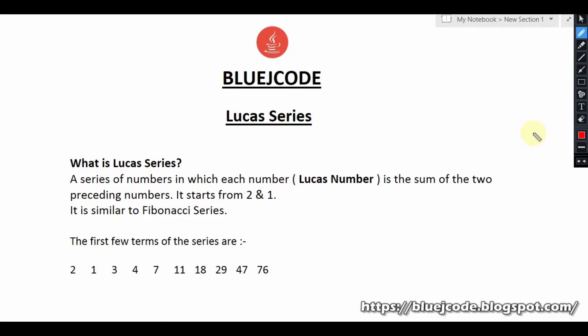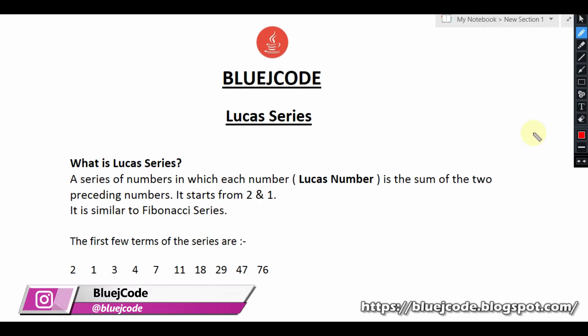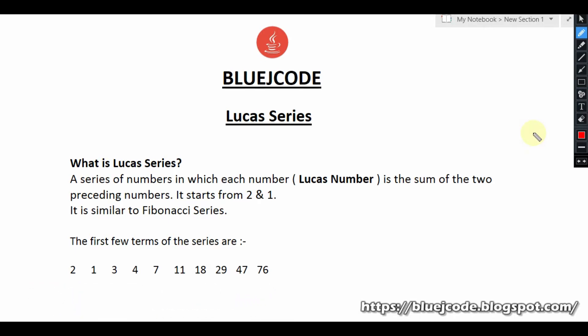Let's talk about Lucas series. A Lucas series is a series of numbers in which each number is the sum of the two preceding numbers. This series starts from 2 and 1. It is similar to Fibonacci series, but in Fibonacci the series starts from 0 and 1, whereas in Lucas series it starts from 2 and 1. This is the main difference.